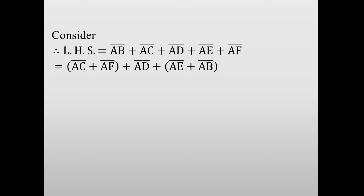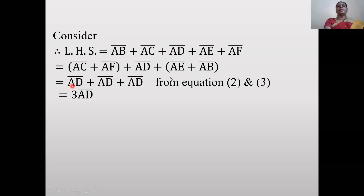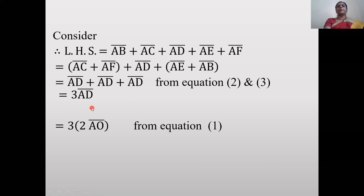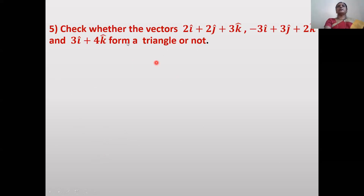LHS = ĀB̄ + ĀC̄ + ĀD̄ + ĀĒ + ĀF̄. Grouping: (ĀC̄ + ĀF̄) + (ĀĒ + ĀB̄) + ĀD̄ = ĀD̄ + ĀD̄ + ĀD̄ = 3·ĀD̄. From equation 1, ĀD̄ = 2ĀŌ, so 3·ĀD̄ = 6ĀŌ = RHS.